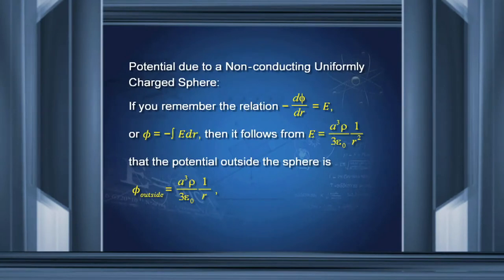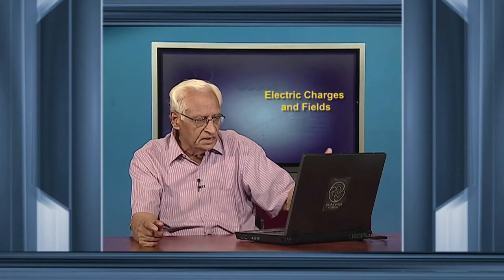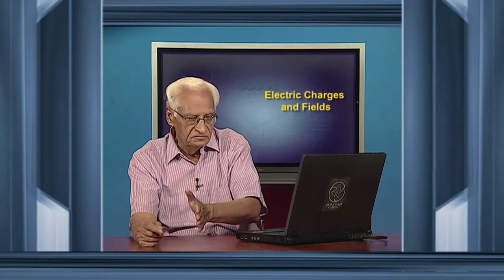For a point outside the sphere, E was given by a known expression. The potential outside the sphere is therefore the integral of E·dr, and this gives us A³ρ/3ε₀ into 1/r. When you integrate 1/r² you get minus 1/r, the minus gets cancelled, and you get φ outside equal to A³ρ/3ε₀ into 1/r. That is the potential for a point outside.